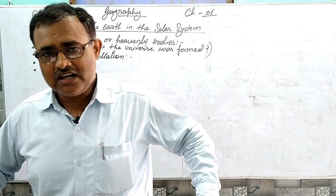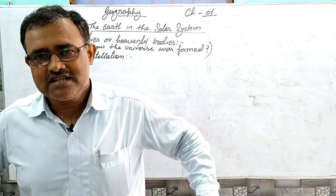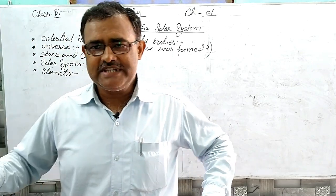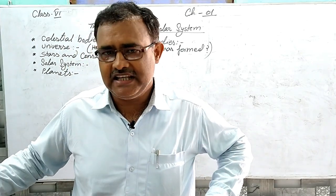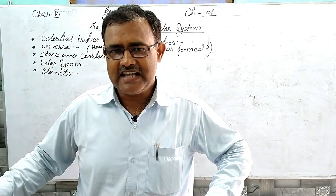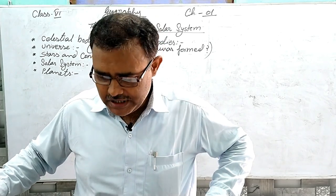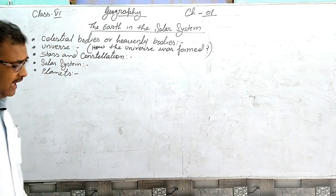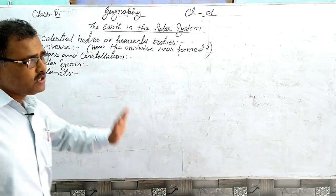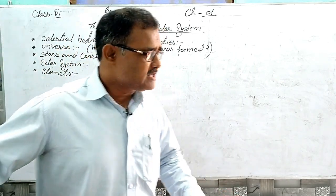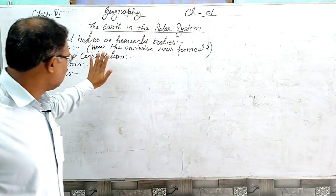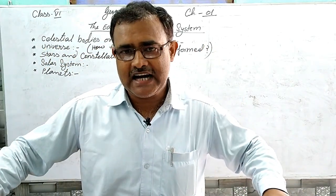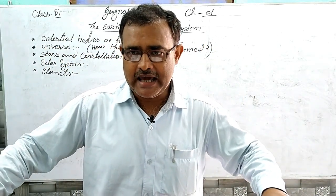These are called celestial bodies and heavenly bodies. All the objects that we see in the sky are called celestial bodies. Now we come to the universe — here we will try to understand how the universe was formed.